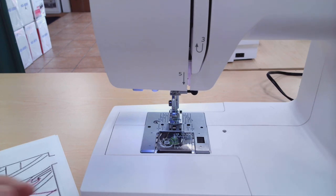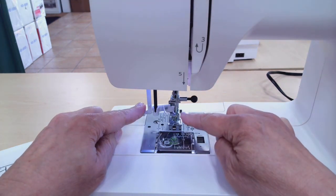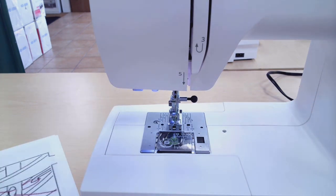Sometimes if you've turned your hand wheel and your needle is coming down, when you bring down that needle threader it's going to go to the side of the needle which may bend it and now it's no longer going to work for you. So you want to be sure that you have that needle in the full upright position before you bring your needle threader down.